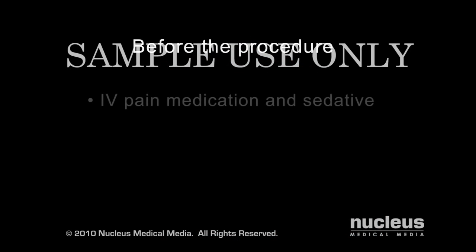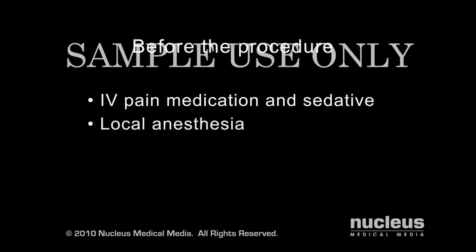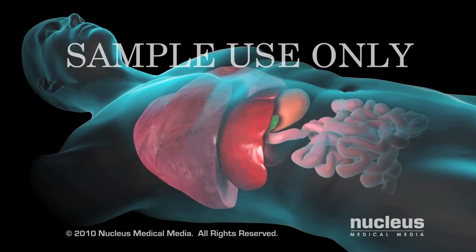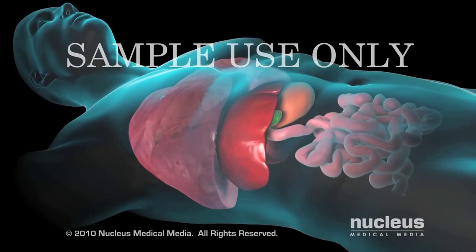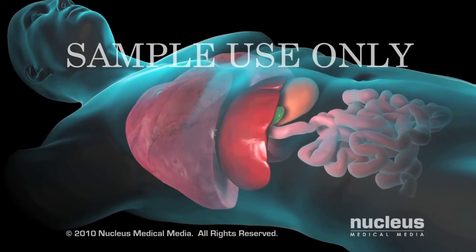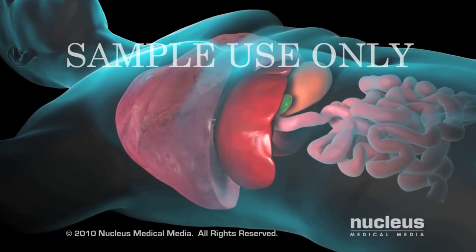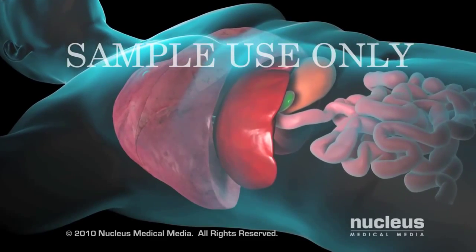Before the procedure, an IV line will be started, and you may be given a sedative to help you relax. A liver biopsy is done with local anesthesia, so you will be awake during the procedure. You will be asked to lie on your back with your right arm above your head. You will need to lie as still as possible during the procedure.